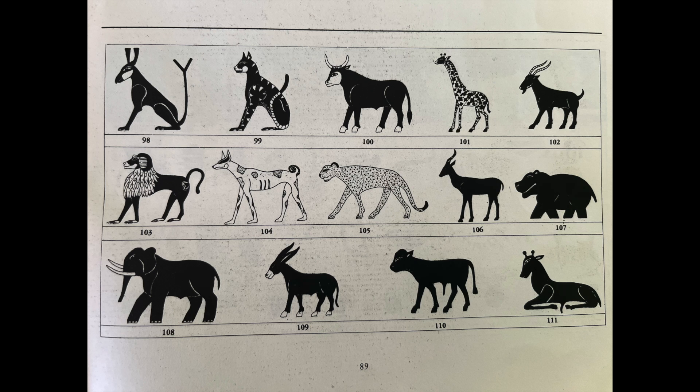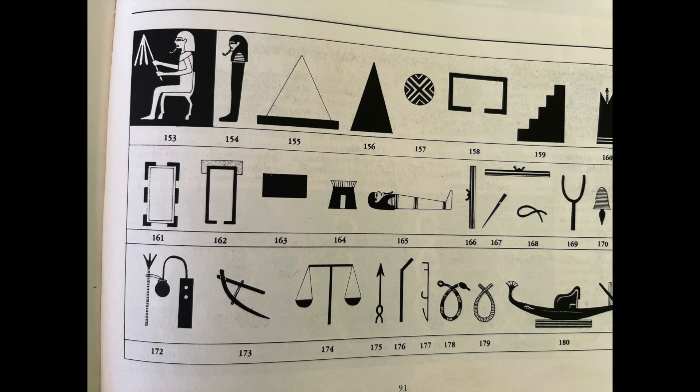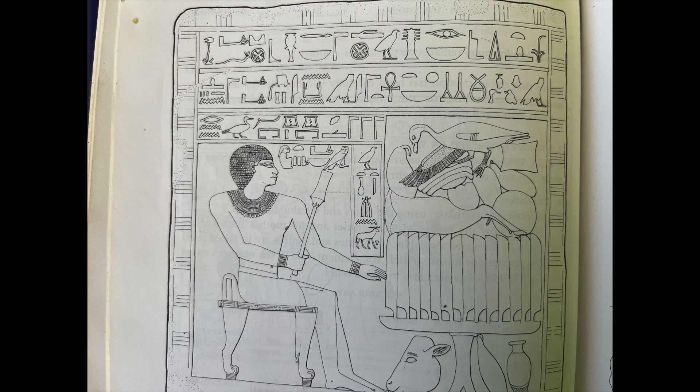There are hundreds and hundreds of determinatives. If it's an animal determinative, the word is for that animal. If it's something else that you don't recognize, that's okay, because at least you know it's a determinative because it's at the end of the word and it's really just there to help you figure out what that word could be.